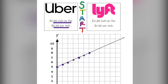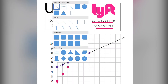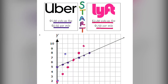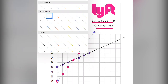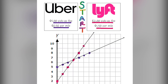Then I begin to graph Lyft. Lyft is going to charge us $2 just to pick me up, so I graph on the y-axis at 2 and then move at a rate of $1.50 per mile — up $1.50, over one. I do a few dots until I can create a line, and I'll thicken it up a bit so we can see where the two lines intersect.